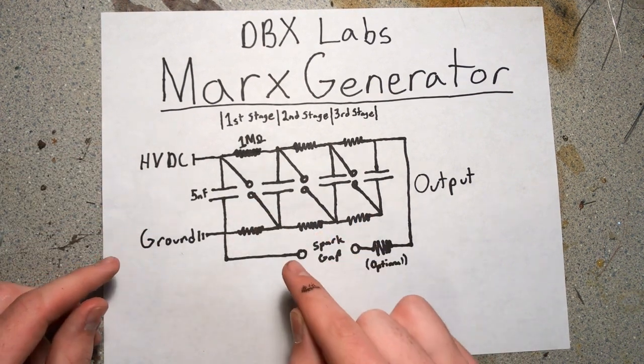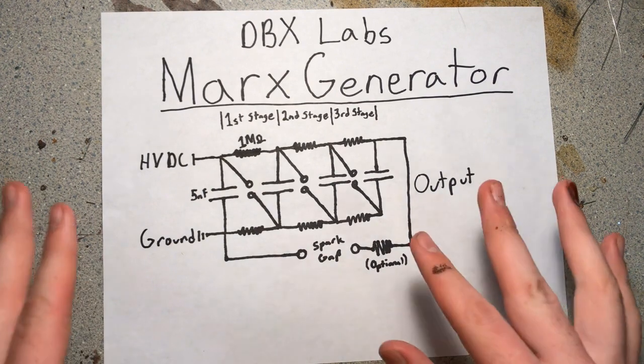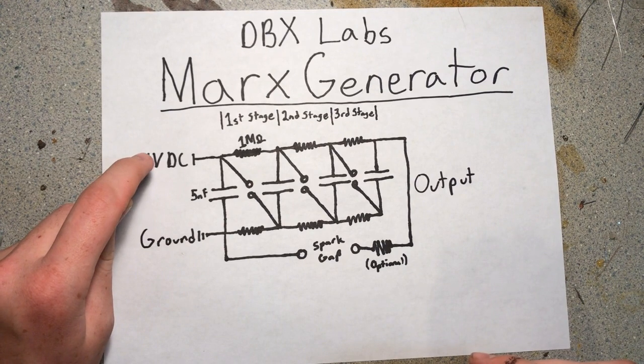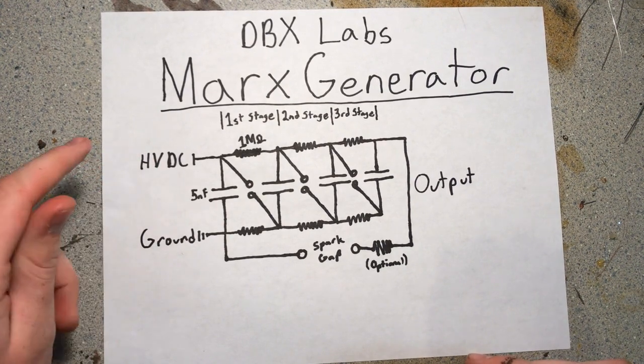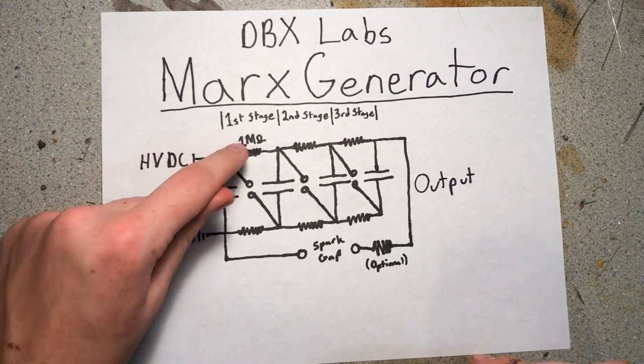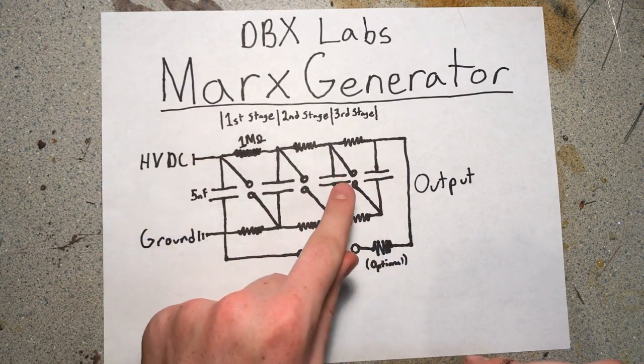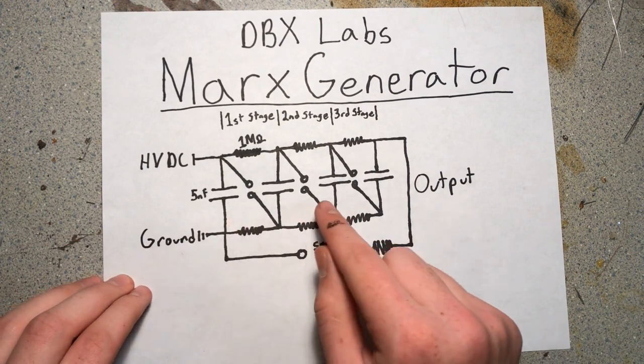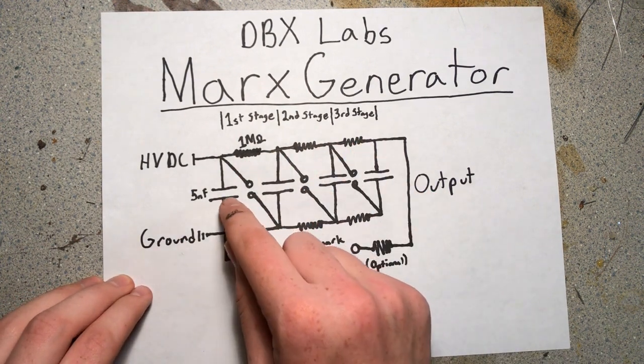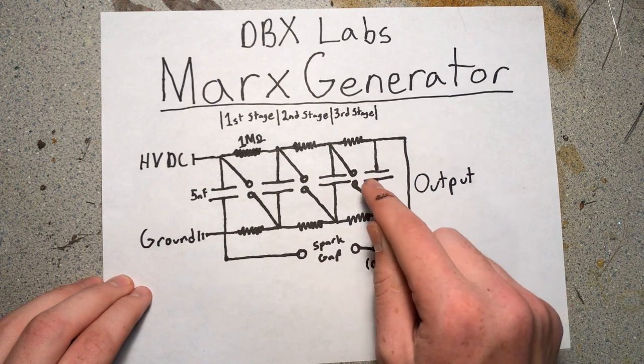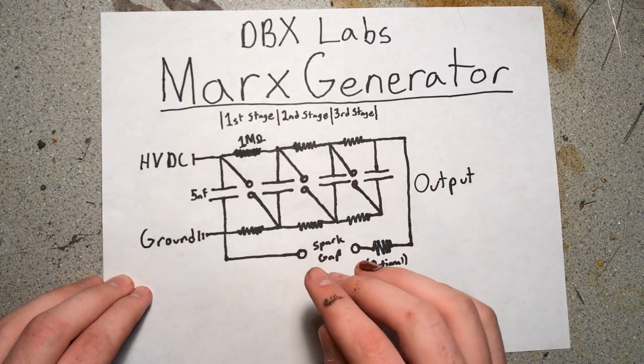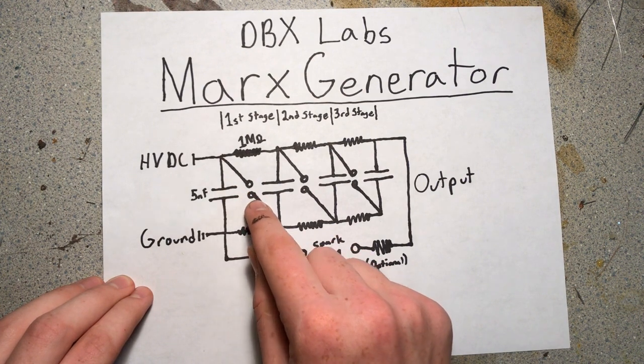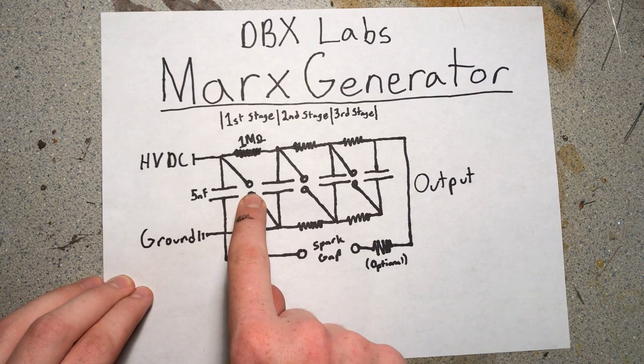And the way it gets around switching through an AC or digital switch system is it uses spark gaps. So the way the circuit works is if you have the high-voltage DC input and it's on, it's going to slowly charge up all of these capacitors in the circuit, and they all charge up at relatively the same rate through these resistors. And once they all reach the same voltage.